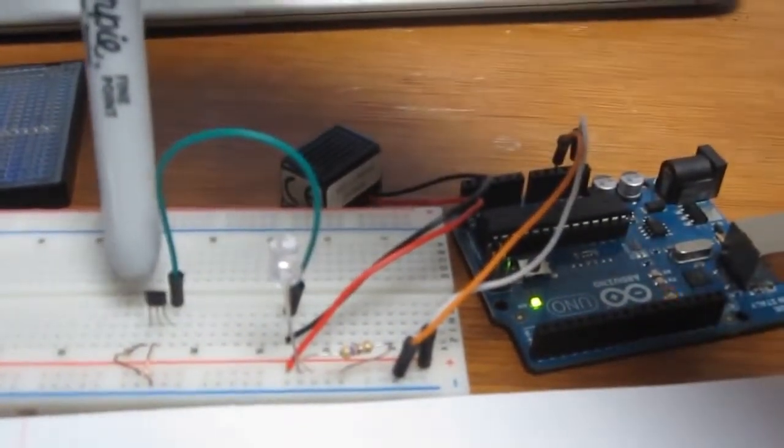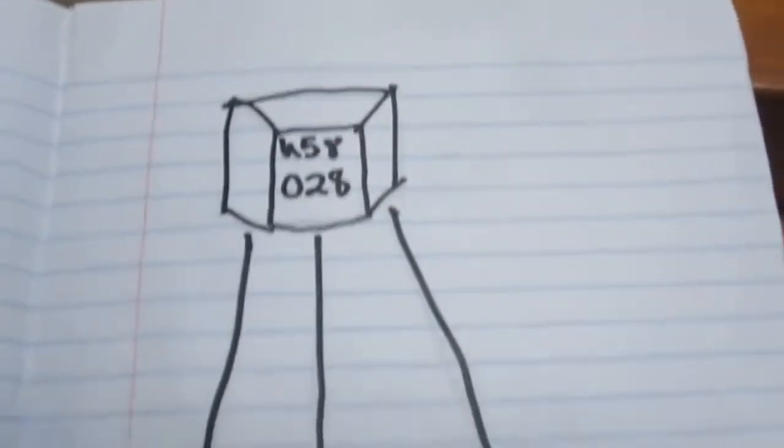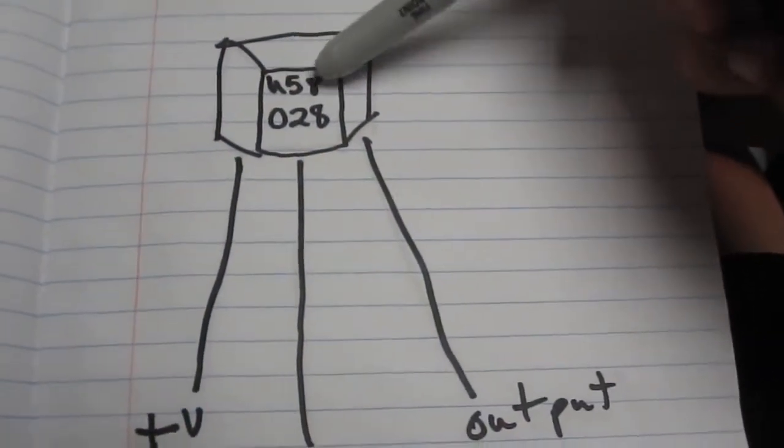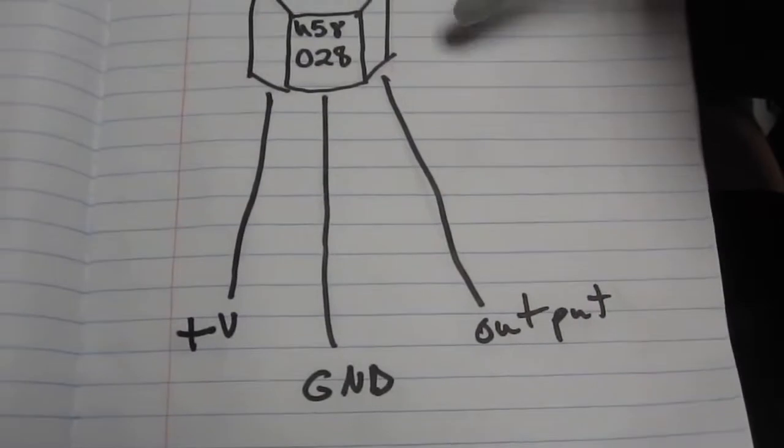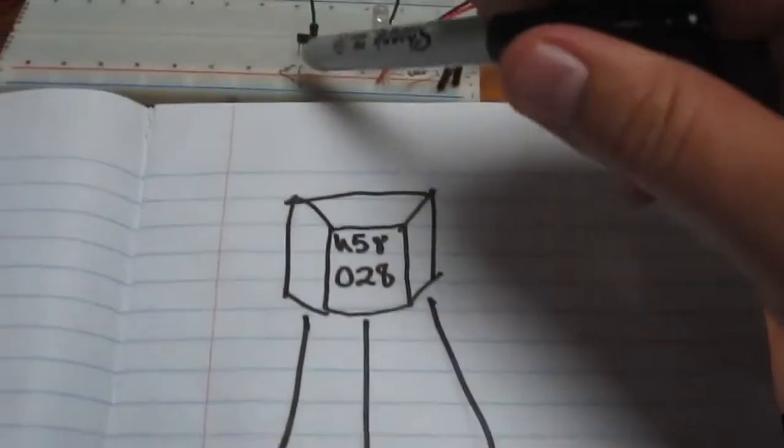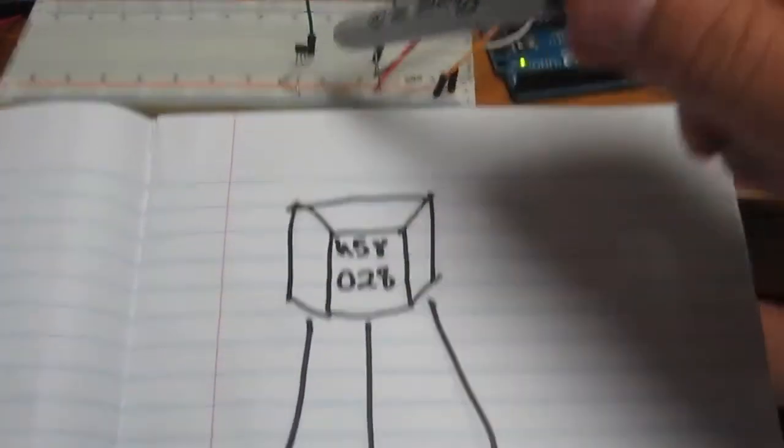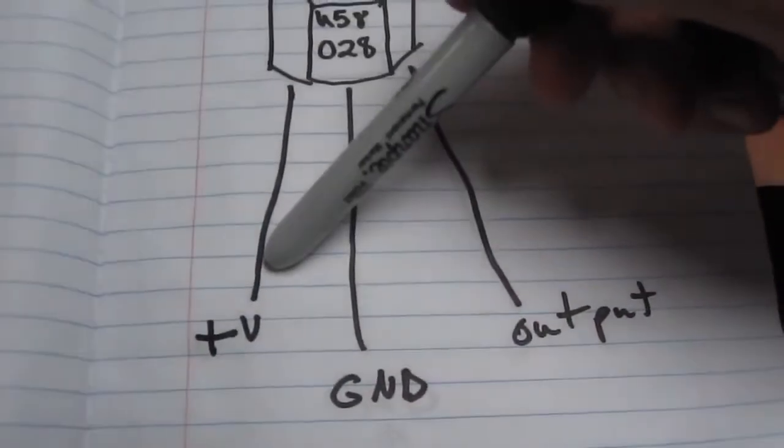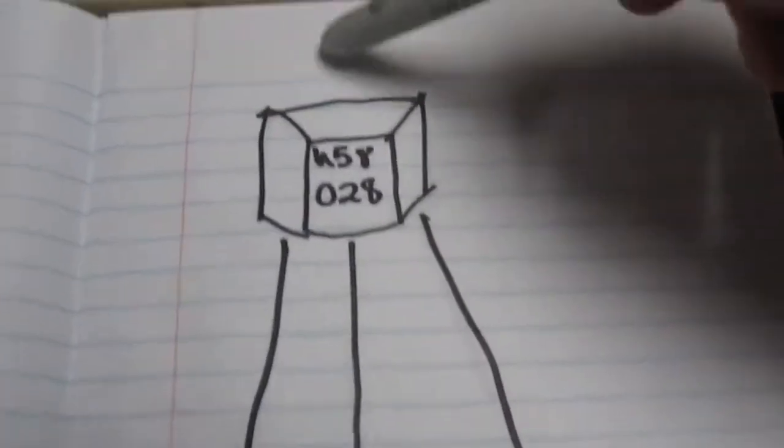This little black sensor here is the Hall Effect sensor, and here's sort of a blown up picture of it. This is just the serial code number for identification on a parts list. But as you can see, there's three prongs underneath the sensor. The one on the right is the output, the one in the center is the ground, and the one on the left is the input voltage.